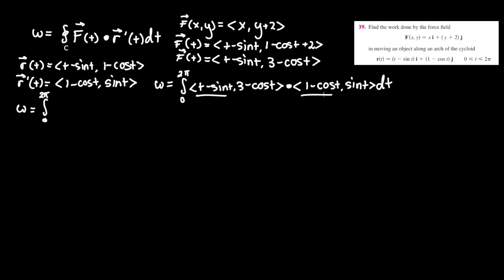So think of it as just using foil properties where first outside inside last where we take t times 1 which is just t, now t times minus cosine t, minus t cosine t.